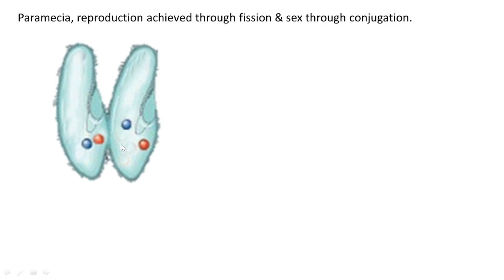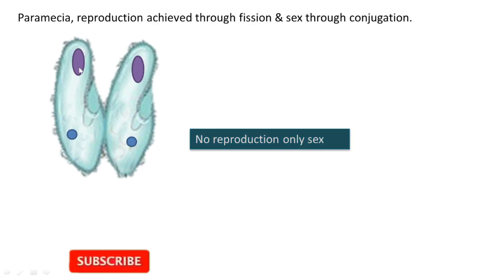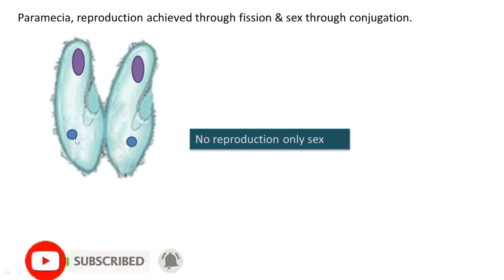These two micronuclei then combine to form a diploid micronucleus, and this diploid micronucleus undergoes mitosis — not meiosis — to form one macronucleus and one micronucleus. Up to this stage there is no reproduction, but sex is happening.